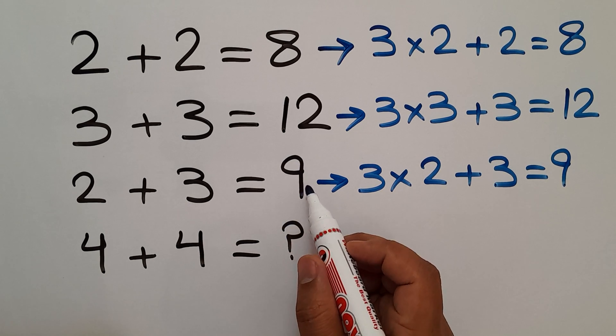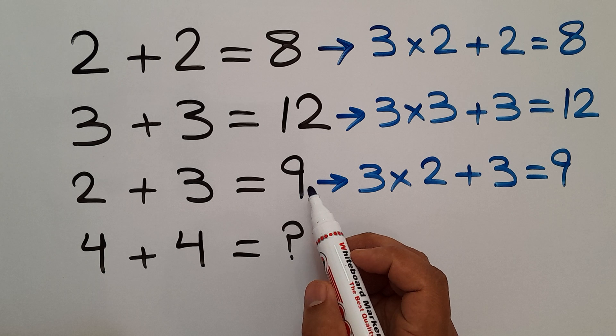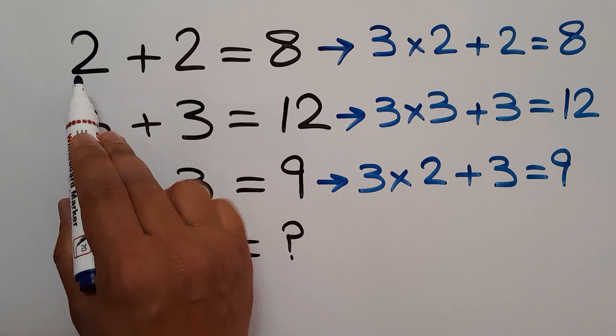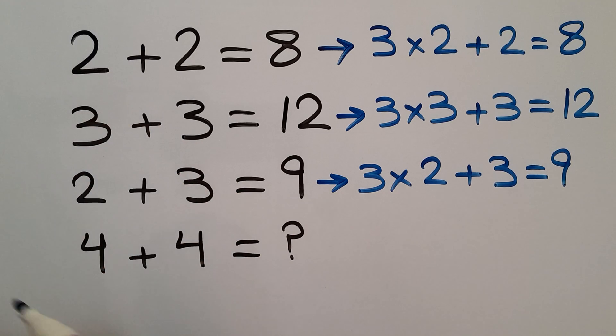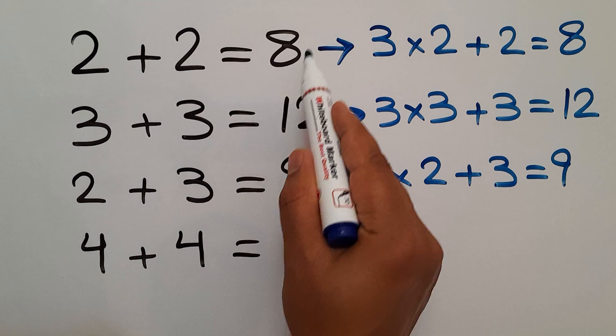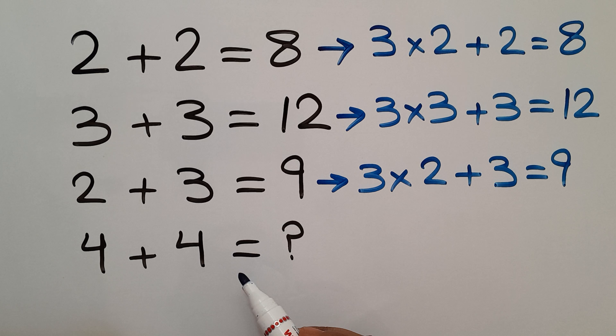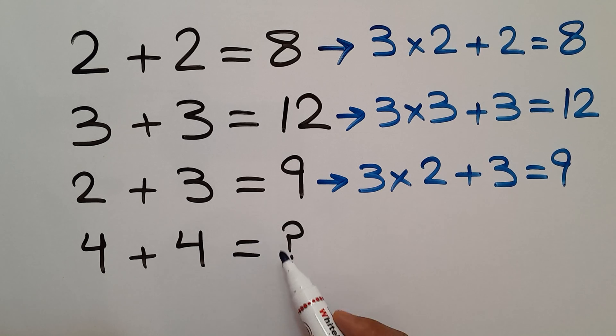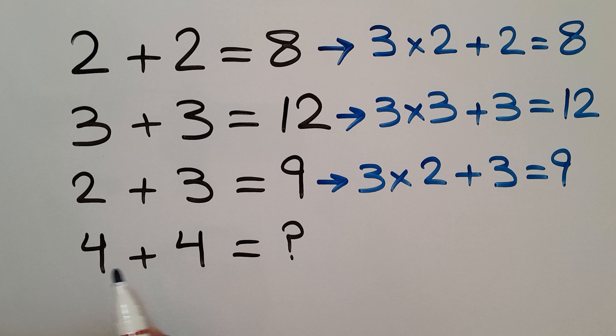So therefore, the pattern that exists here is 3 times the first number plus the second number gives us the right hand side number. Now let's use this pattern to calculate the missing number.